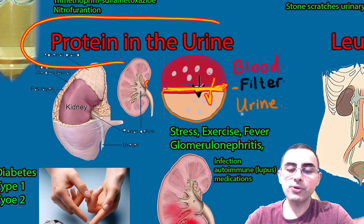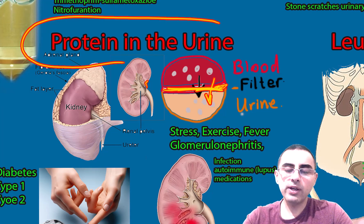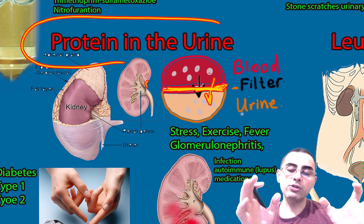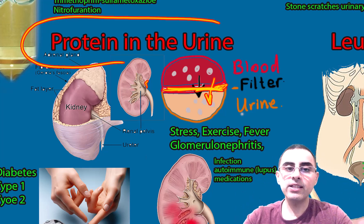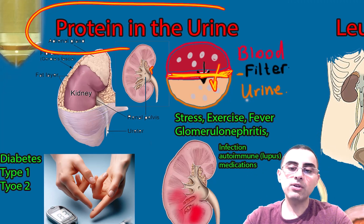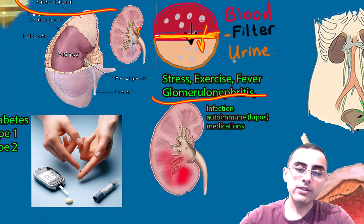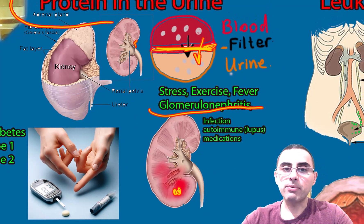Proteinuria can be caused by stress, exercise, or fever. For example, a person with flu and fever may have transient proteinuria lasting only a few days to two weeks. However, persistent proteinuria is a serious condition.